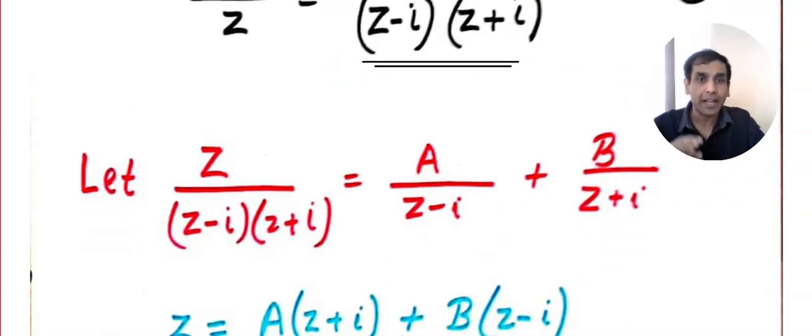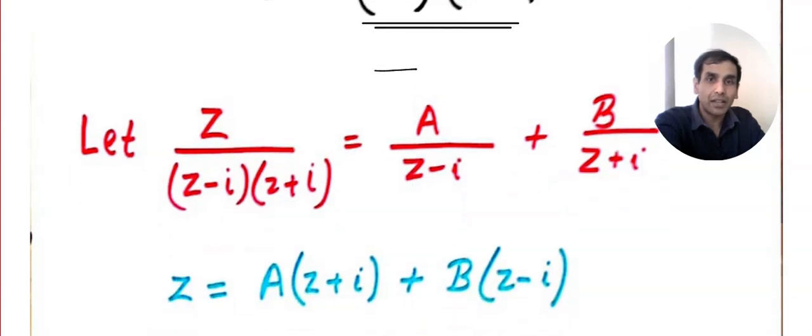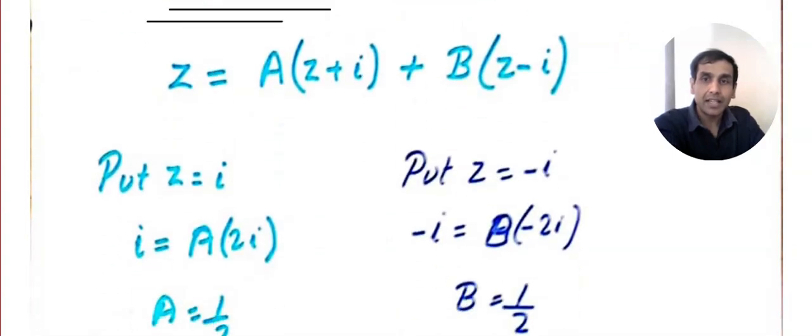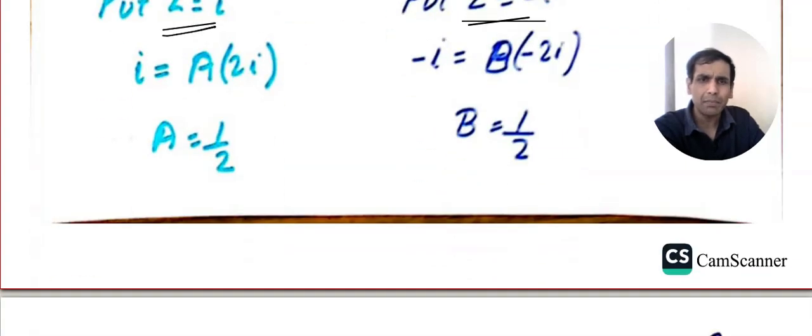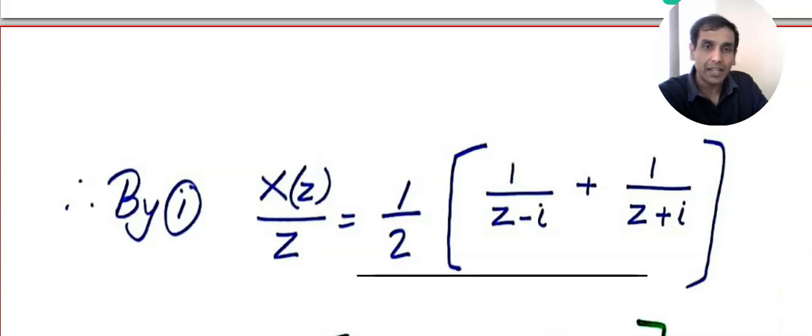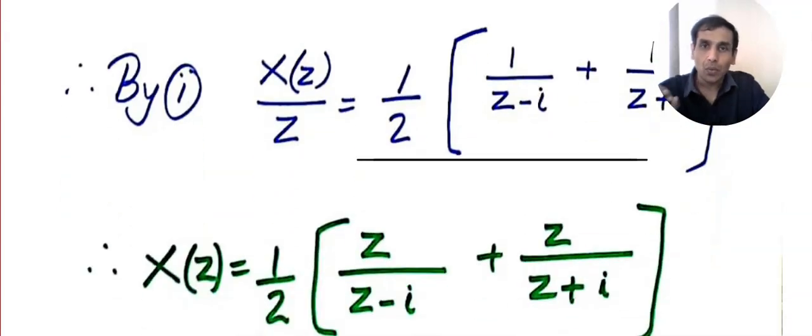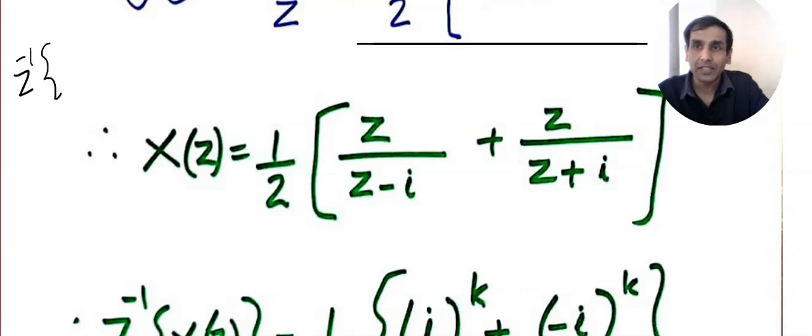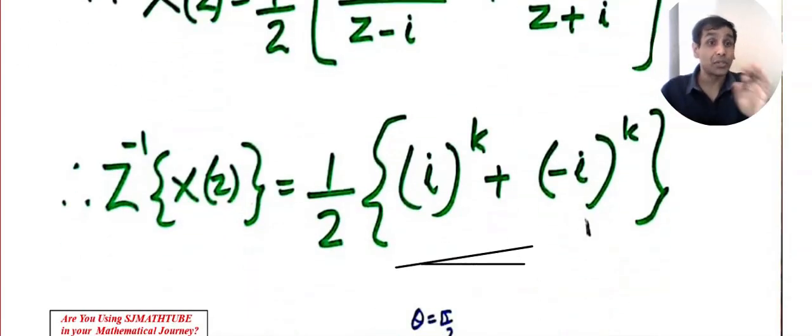And then, we are going for partial fraction method. A divided by z minus i plus B divided by z plus i. Then, I am going to multiply throughout by z minus i into z plus i. And then, you put z equal to i, z equal to minus i. Same method, partial fraction. We get very cute values. But, at the end, I got something like this. Nothing to worry. Now, multiply throughout by z. And, can you please tell me what is the formula of z inverse of z by z minus a? Yeah, very nice. A to the power k. So, I got the answer. But, I should not leave it here.